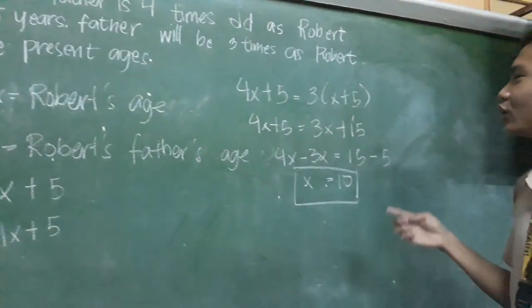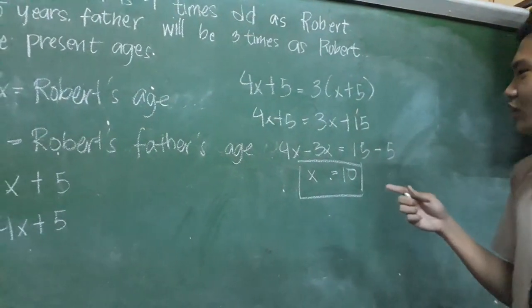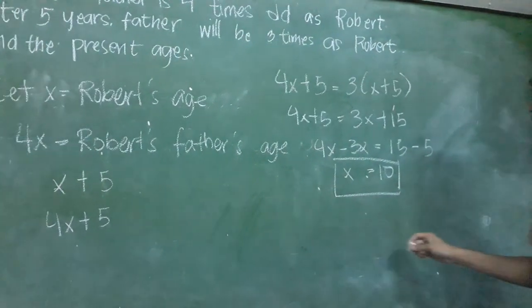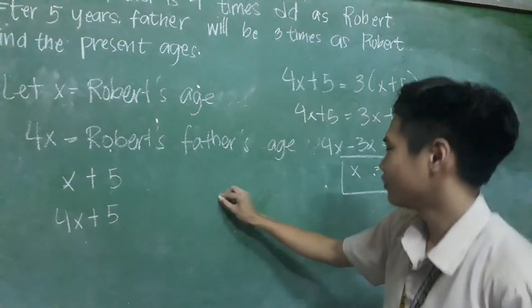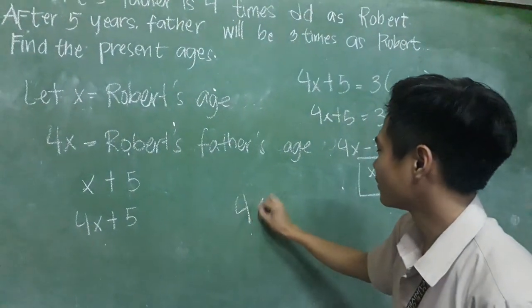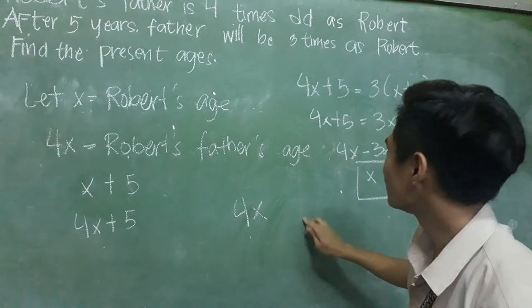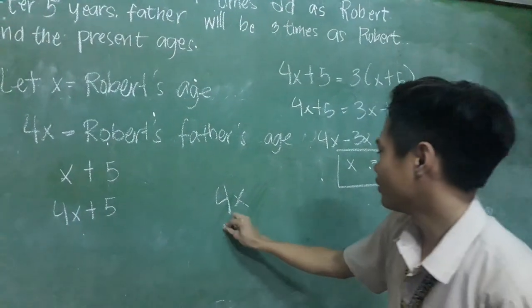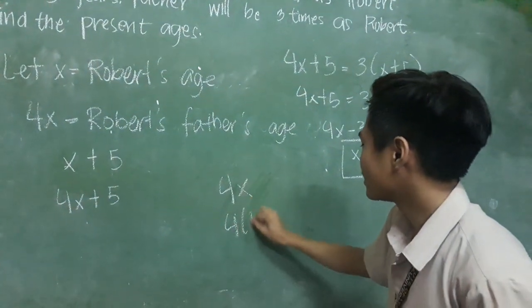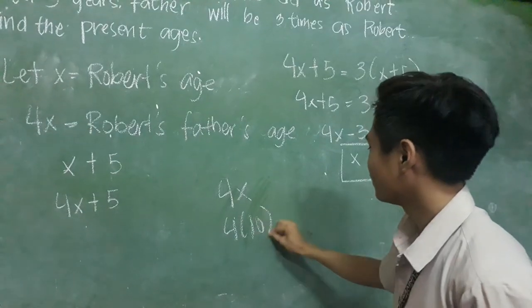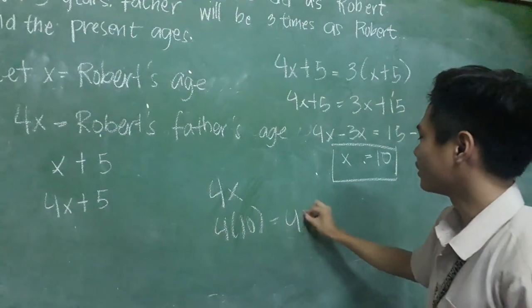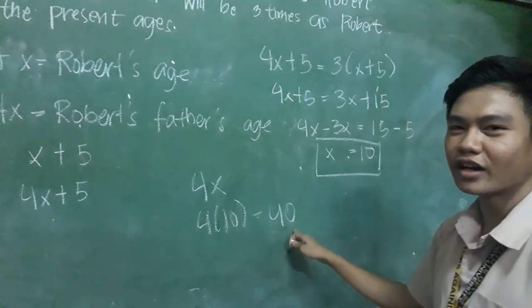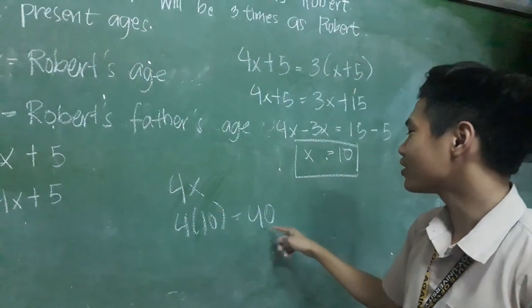Now all that we need to solve is Robert's father's age. It's simply 4X. So we substitute X here: 4 times 10 equals 40. So now we also have the age of Robert's father.